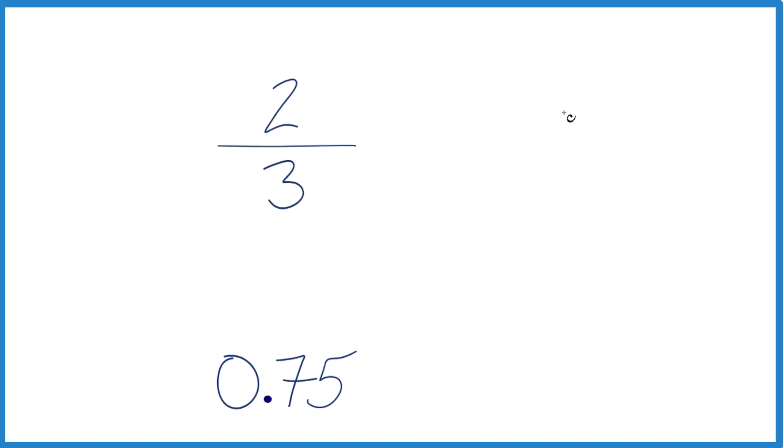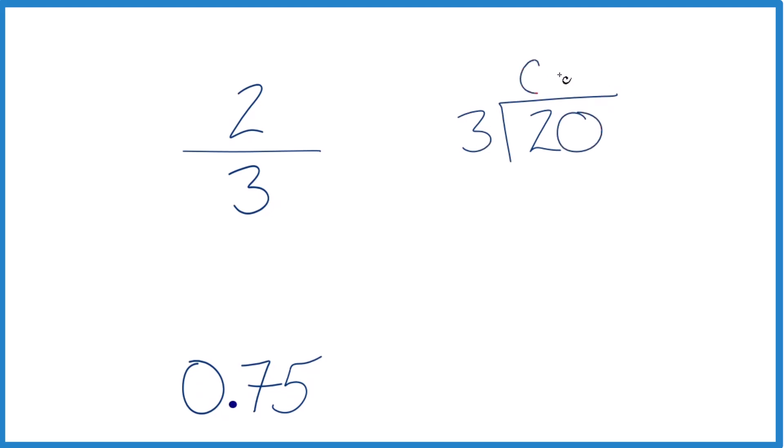So it's 2 divided by 3. We have 2 and we want to know how many times 3 goes into 2. It doesn't go into 2. We could call this 20 as long as we put a 0 and a decimal point up here. Now 6 times 3, that's 18. When we subtract, we have 2 left over.